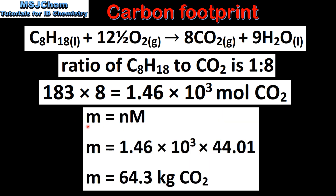Next, we use the equation: mass equals amount in moles times molar mass. The amount in moles of carbon dioxide is 1.46 times 10 to the 3 and the molar mass of carbon dioxide is 44.01. When we multiply these two together and then divide by 1000 we get 64.3 kilograms of CO2.